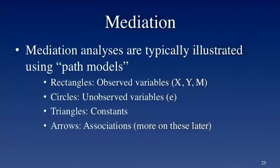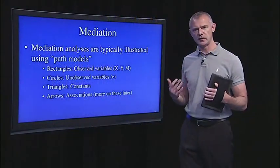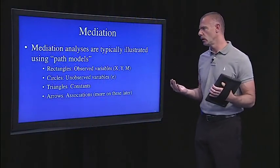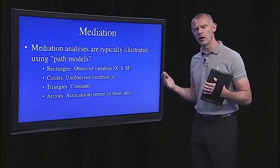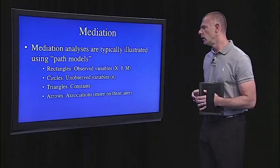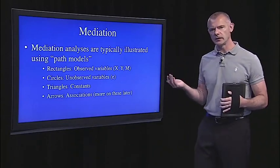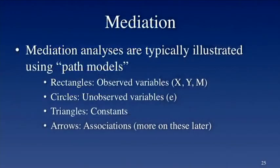We're doing mediation analysis, but now we're going to demonstrate it using this graphical model that I'll refer to as a path model. Path models have standardized notation. Observed variables, and some people will call these manifest variables, are represented by rectangles. So X, Y, M, our predictor, outcome, and mediator are all represented by rectangles because we observe them.